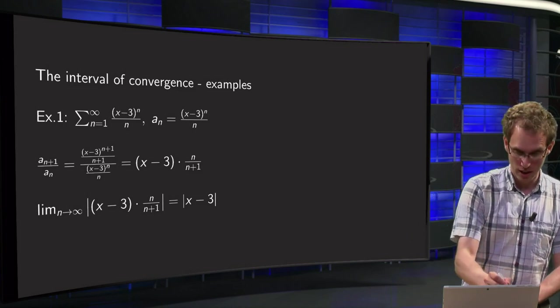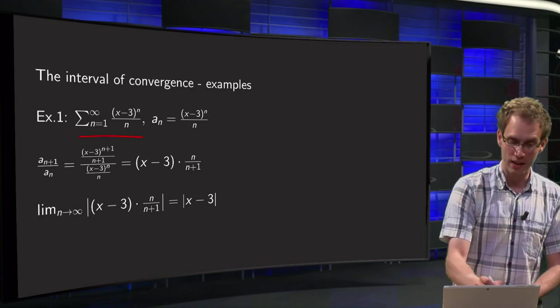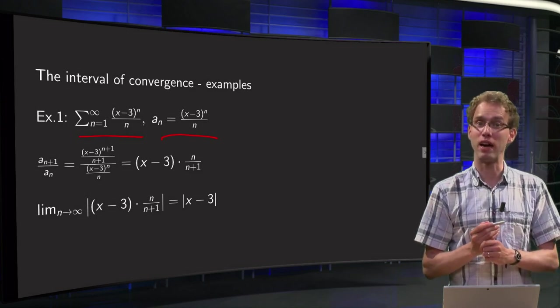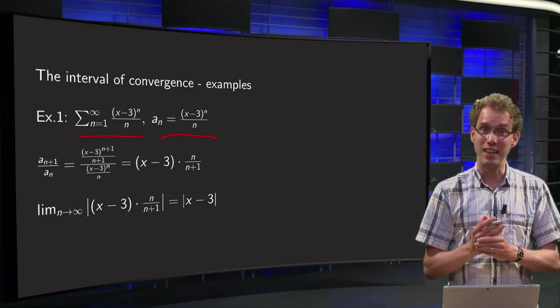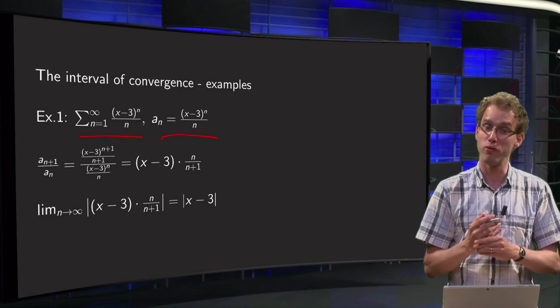Power series n from 1 to infinity, (x-3)^n over n. So a_n equals (x-3)^n over n. I will do the ratio test to establish convergence, for which values of x does your power series converge.